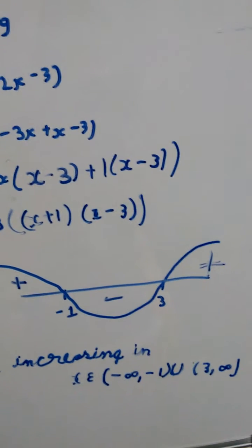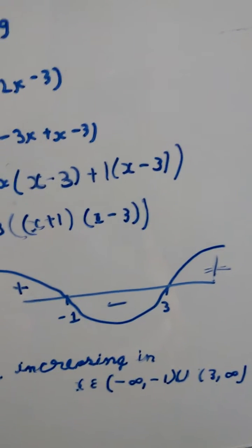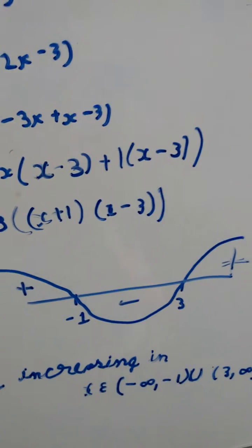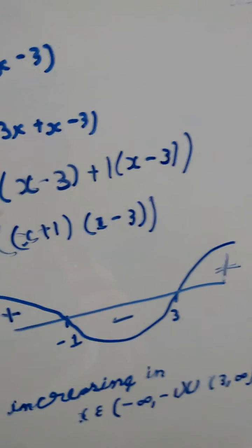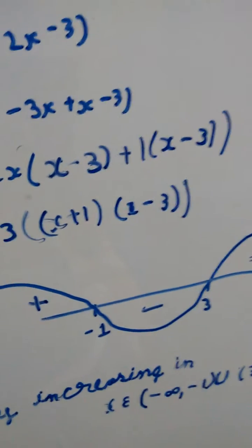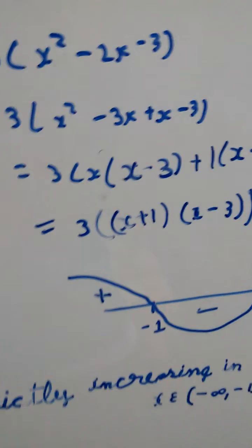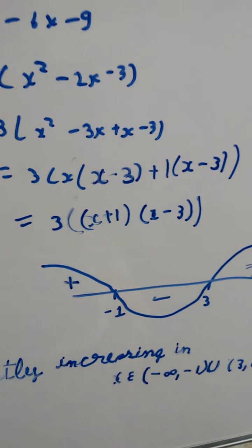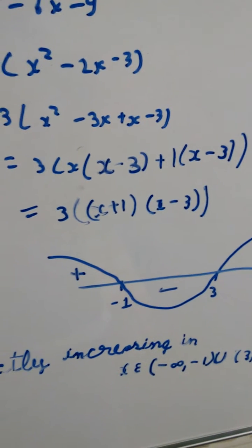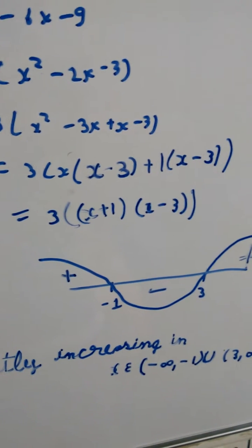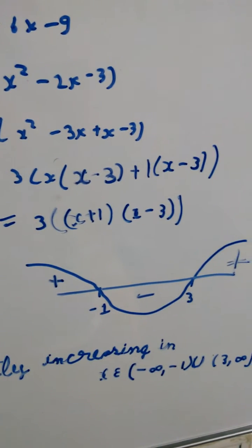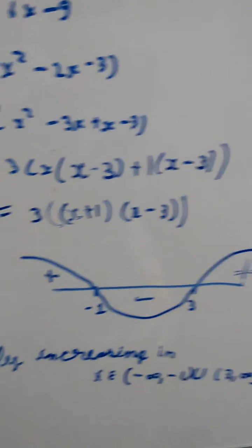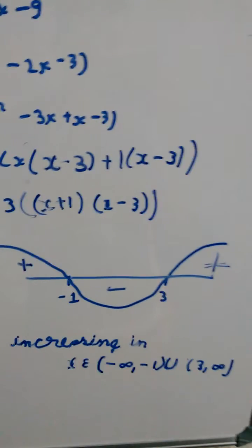After doing the wavy graph, we find that the function is positive after x is equal to 3, and also positive when x is less than minus 1. But it is negative between minus 1 to 3, so it is decreasing in that range.